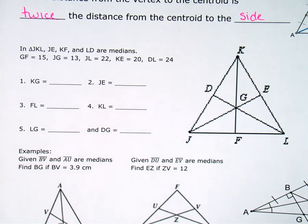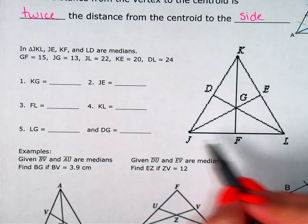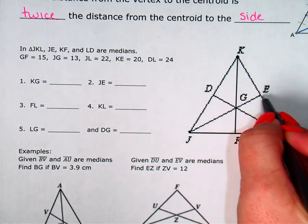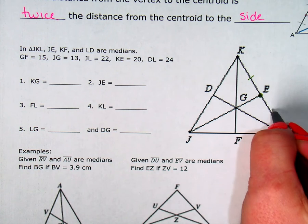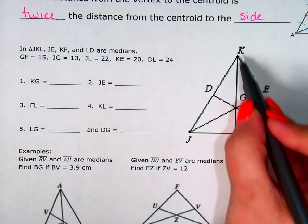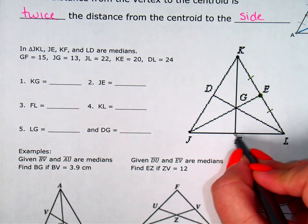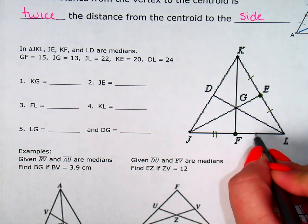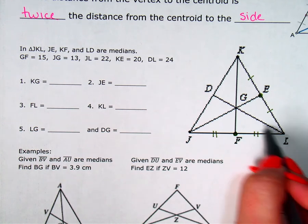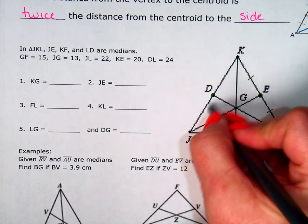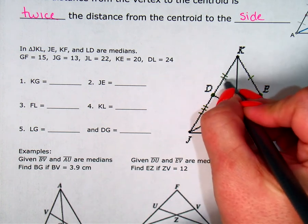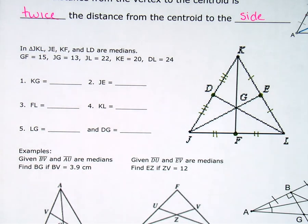So, let's see how we can apply that in this figure here. They've given me lots of interesting information on this one. In triangle JKL, JE, KF, and LD are medians. So, JE is a median, so I know this is a midpoint, and this piece equals this piece. KF here is a median, so that means this F is a midpoint, and these two pieces are the same. And LD is a median, so D is a midpoint, and this piece is the same as this piece.